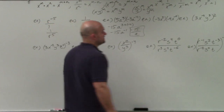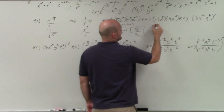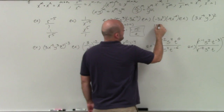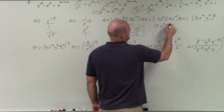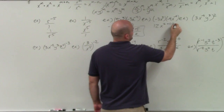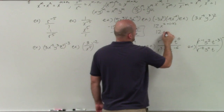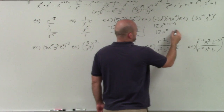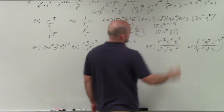The next example, I'm going to do the same thing. Negative 3 times negative 4 is going to be a positive 12. x squared plus negative 2 — that's going to be 12 times x to the 0 power, which is just going to leave me with 12.